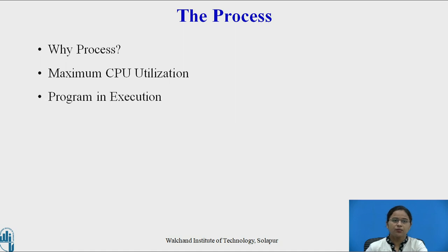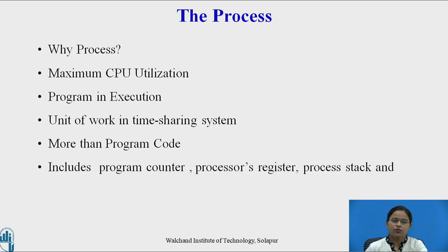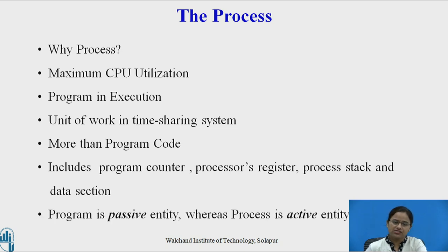A process is nothing but a program in execution. We can execute multiple processes — like a word processor, web browser, and music player — at the same time in the system; each is nothing but a process. It is also a unit of work in a time-sharing operating system. A process is more than just program code because it contains a program counter, processor registers, process stack, and data section. The program is simply a set of instructions, so we can say the program is a passive entity whereas a process is an active entity.